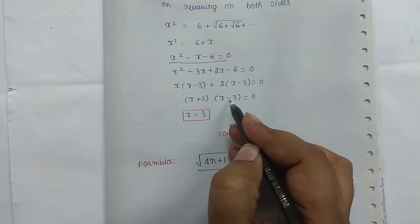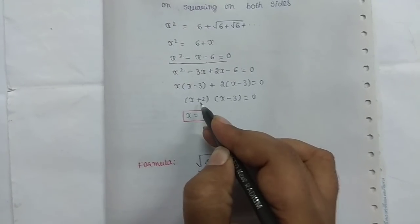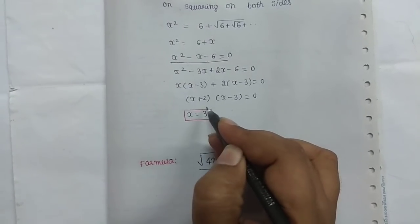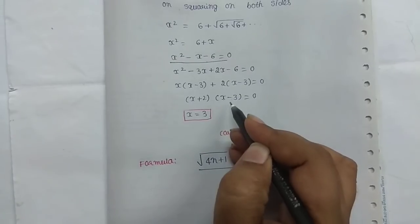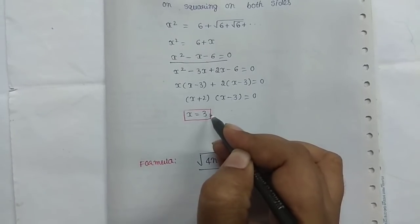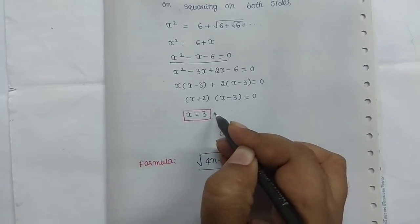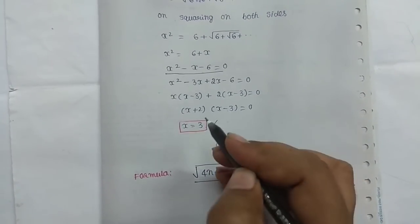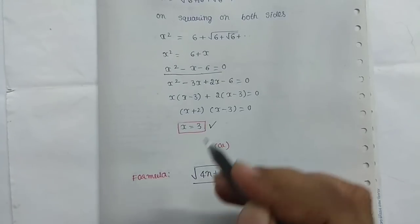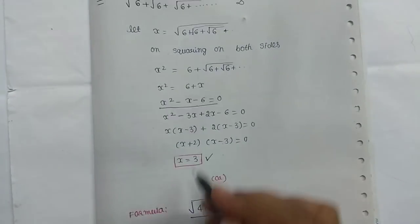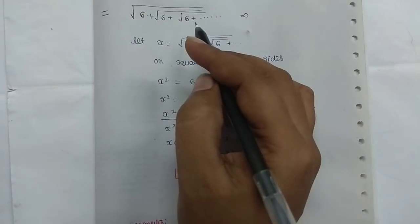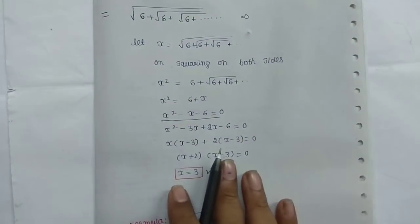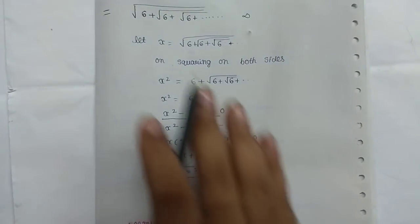So, x is equal to 3 and x is equal to minus 2. If we have a minus value, we reject it — only the positive value is valid. So, finally, x is equal to 3. This is the traditional method.